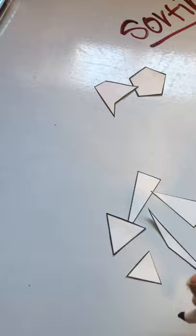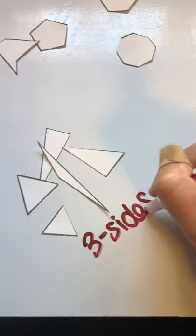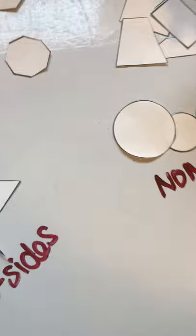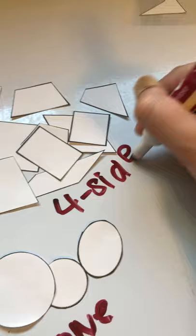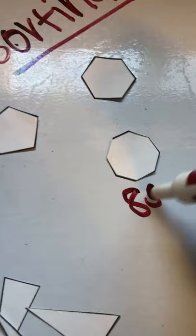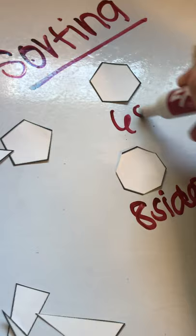So then I'm going to write down how I sorted them. These have three sides. No sides. Four sides. This one has eight sides. Six sides. And if you notice, the six and eight sides don't have very many shapes.